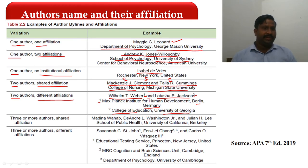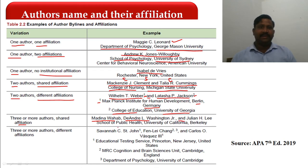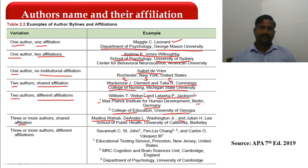For three or more authors with a shared affiliation, the names are separated by commas and the last author is separated by 'and.' Then the shared affiliation is listed: School of Public Health, University of California, Berkeley.